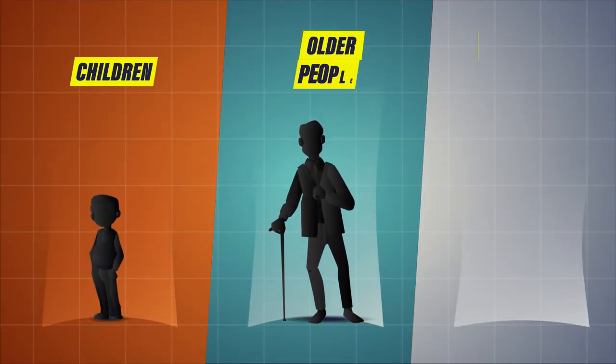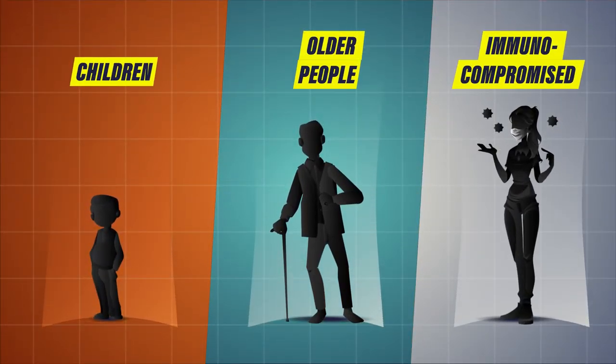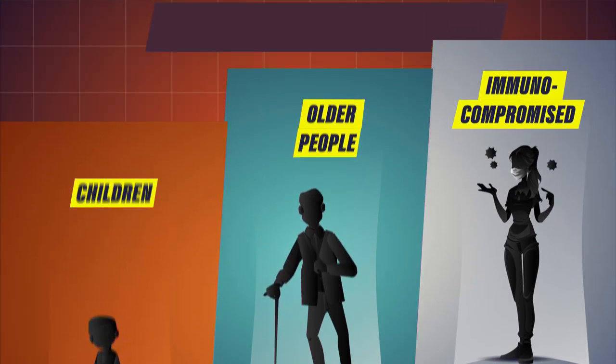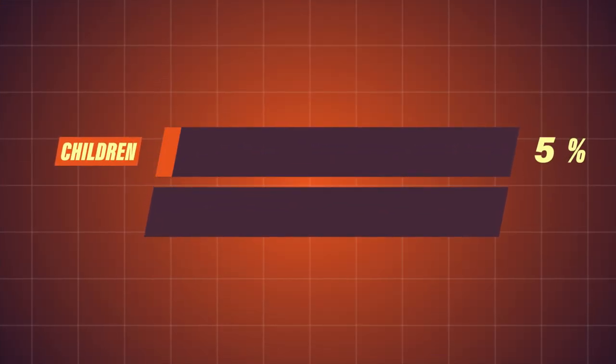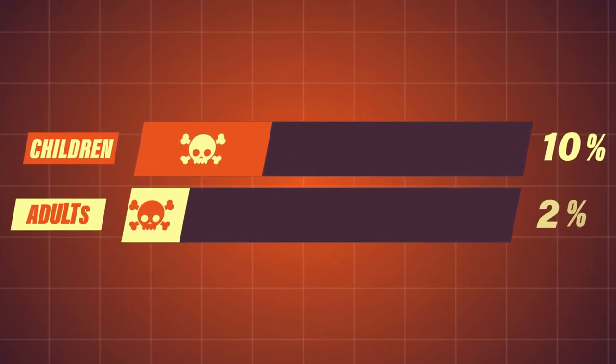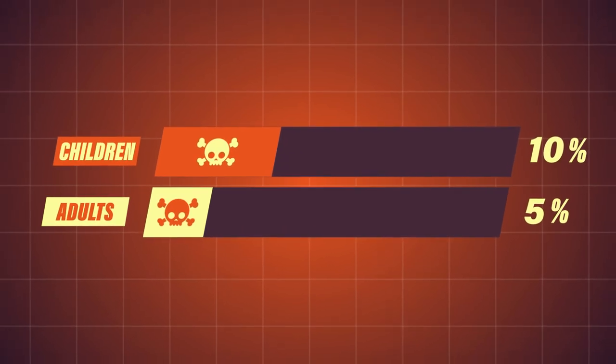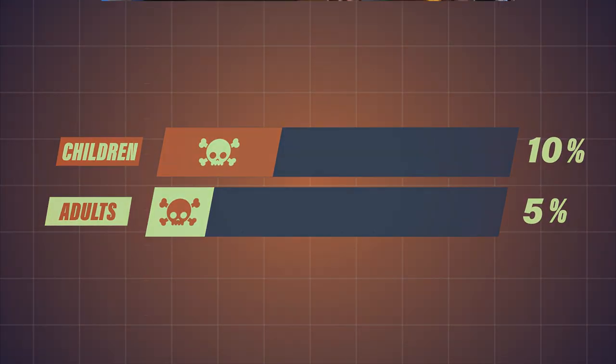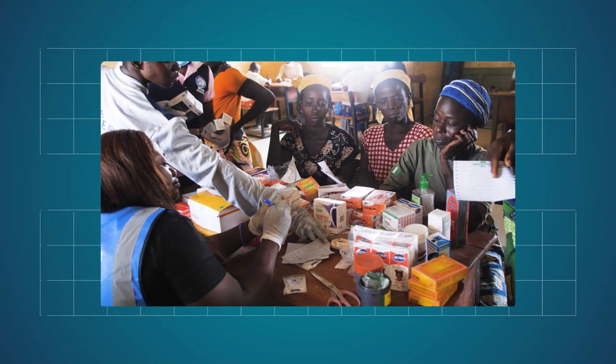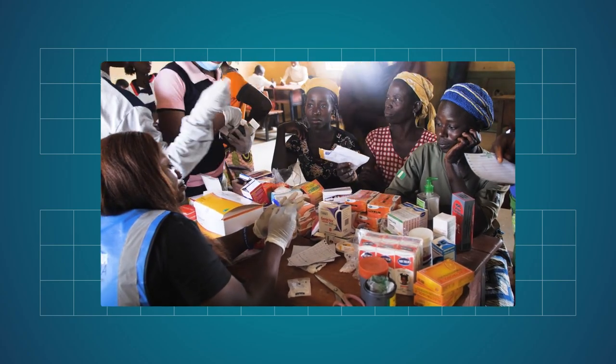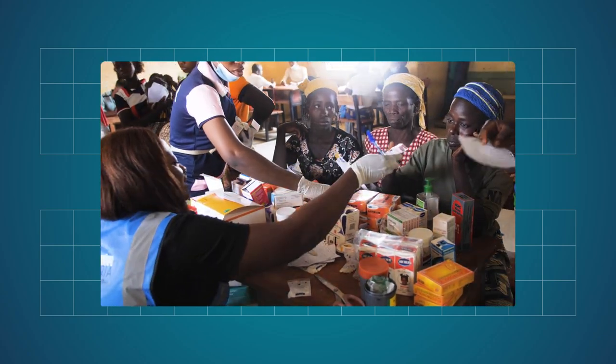Children, the elderly, immunocompromised individuals, and pregnant women are particularly at risk of severe disease. The Clade 1B variant has a mortality rate of 10% in children and 5% in adults, spreading across many African countries and recently reaching Sweden. However, these mortality rates have been observed in countries with less developed healthcare systems compared to the West.